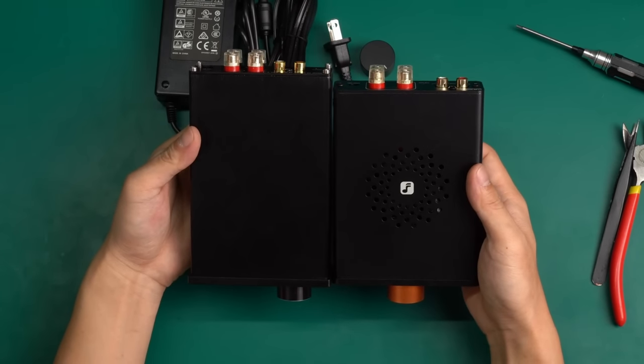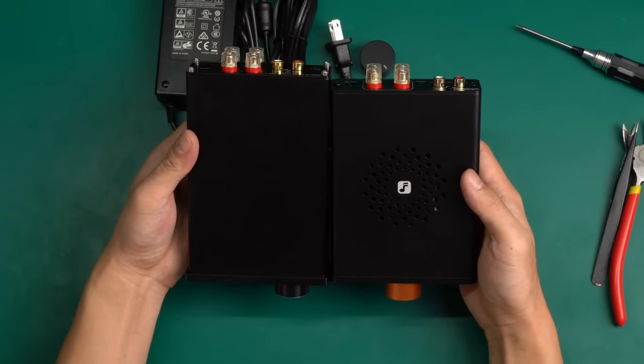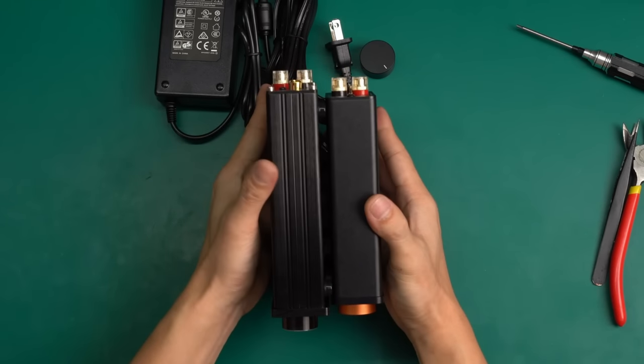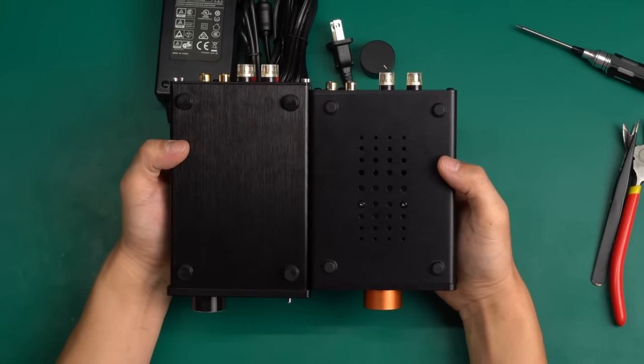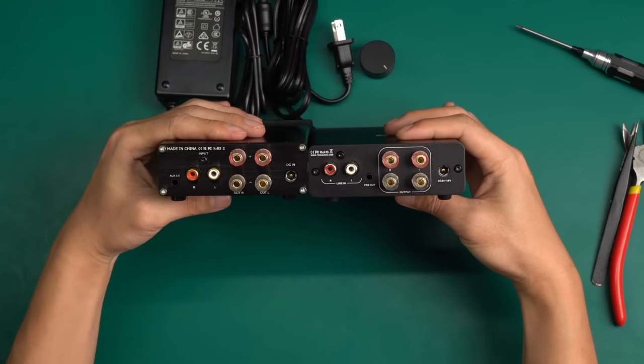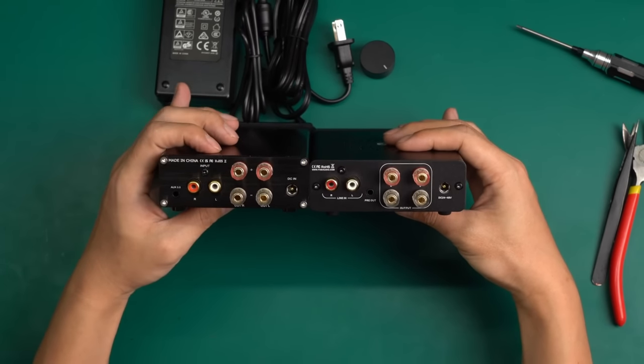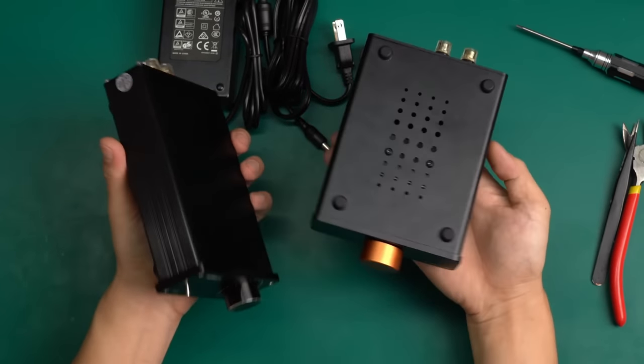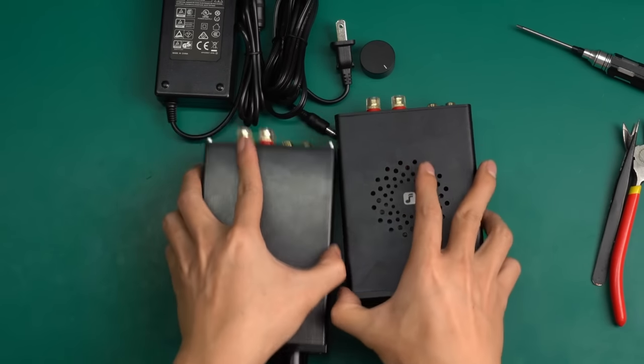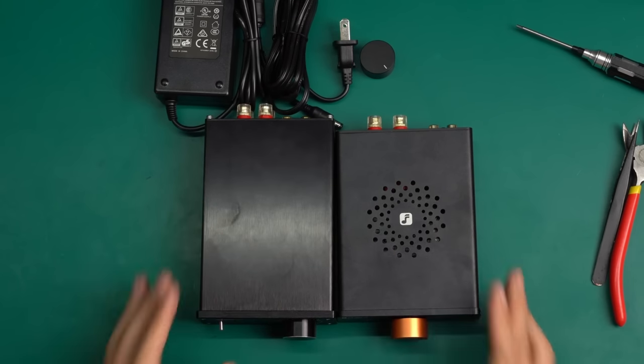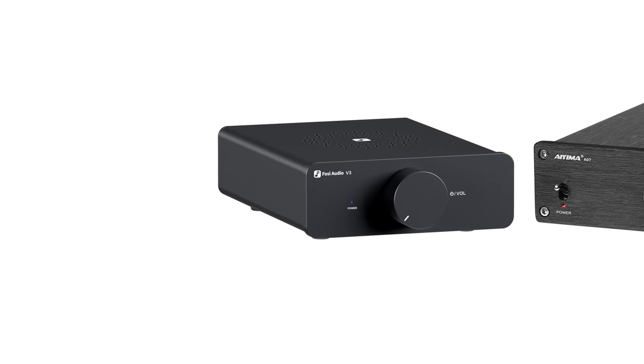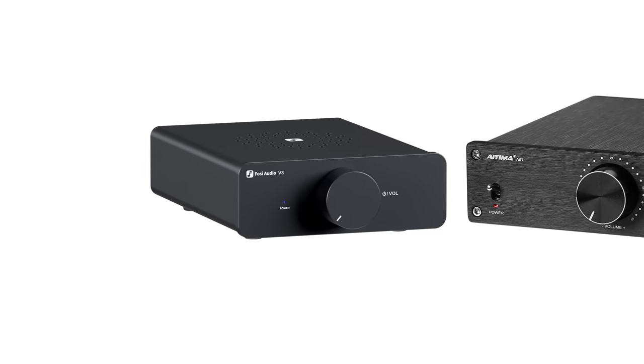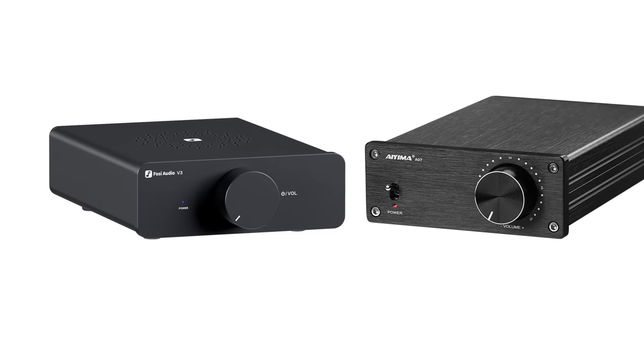The width of the two units is almost the same, but the V3 is a little shorter in length. The biggest difference is that the V3 has a very unique ventilation design, while the A07's casing is completely sealed. The input and output interfaces of the two units are the same. It seems that the V3 from Fossi Audio is designed to compete with the A07. In addition, the V3 uses fewer screws on the body, and there isn't a single screw visible on the front panel. Whereas the screws on the A07 are quite conspicuous, giving a strong industrial feel.